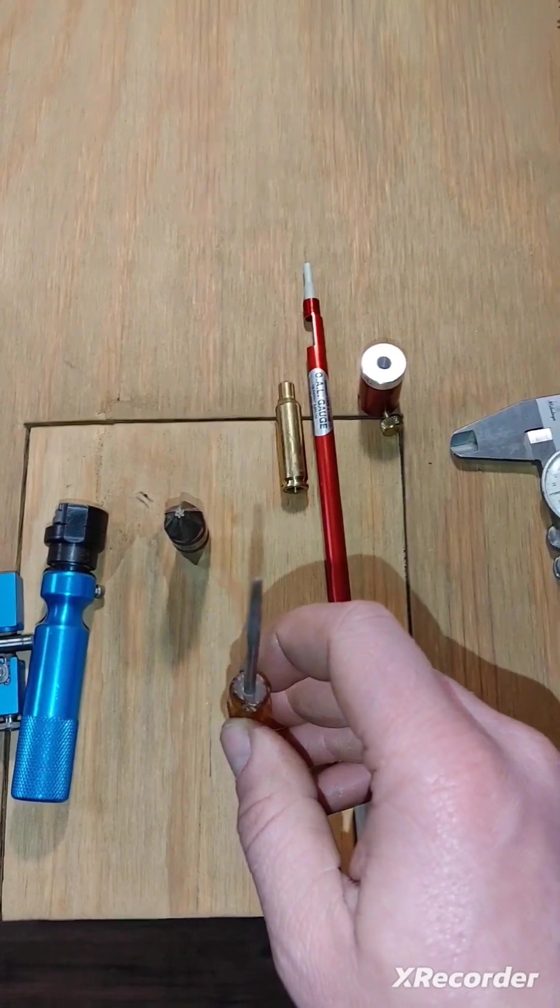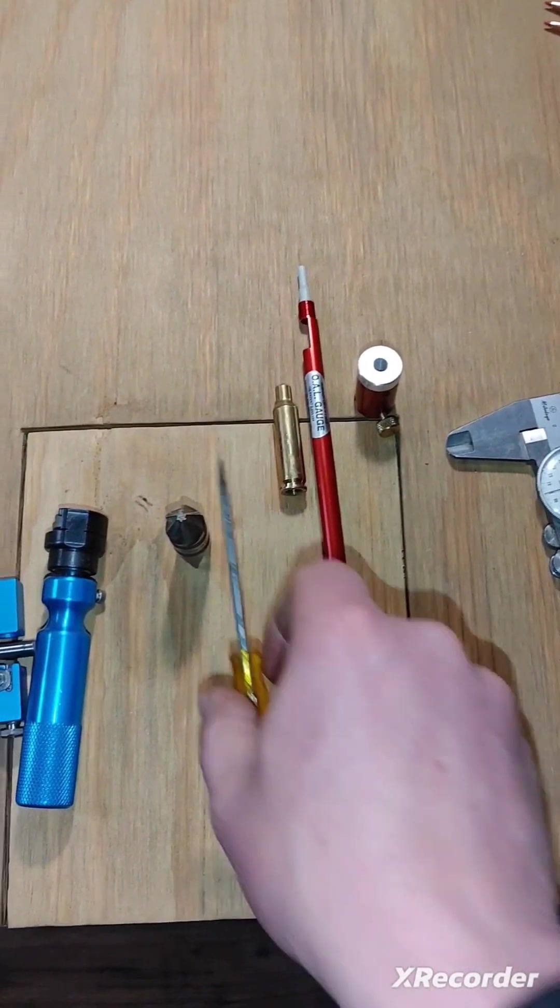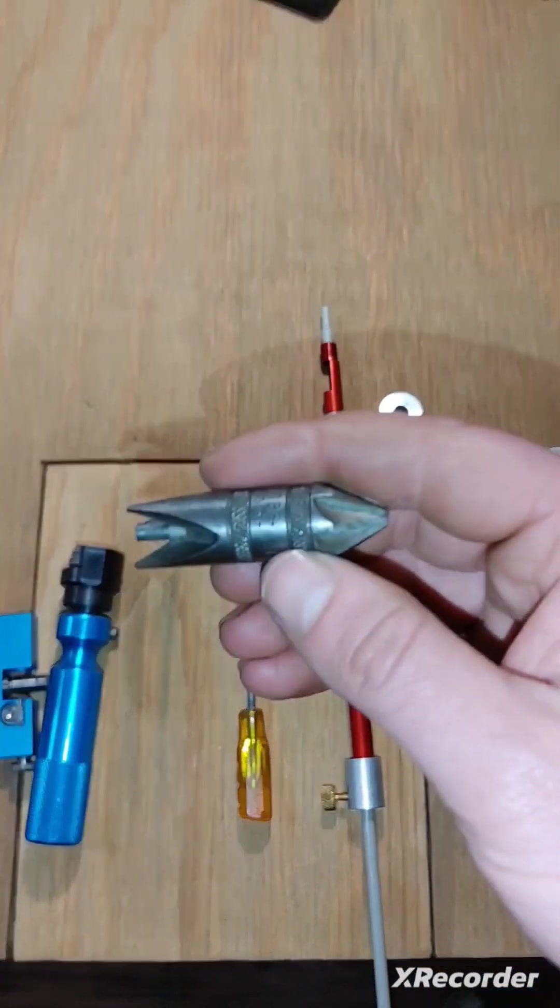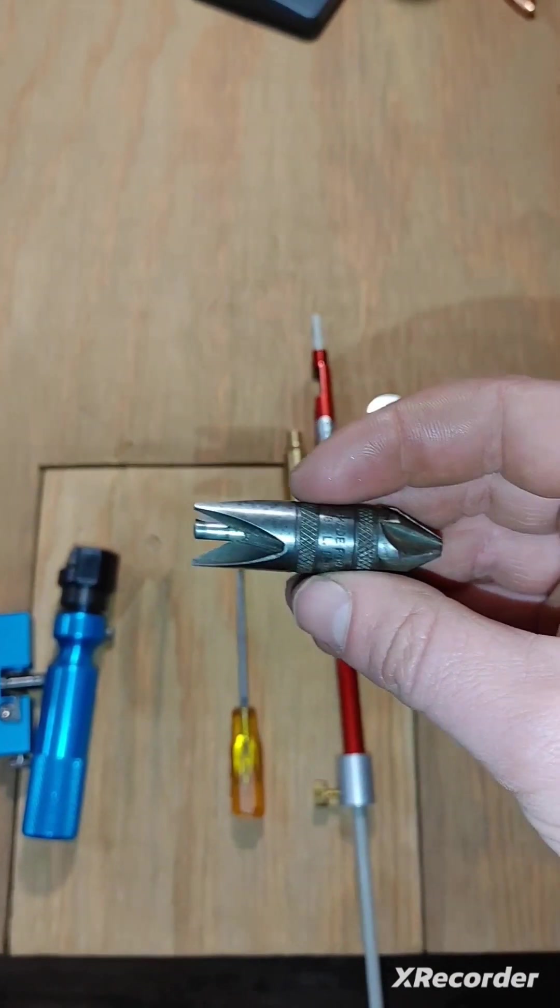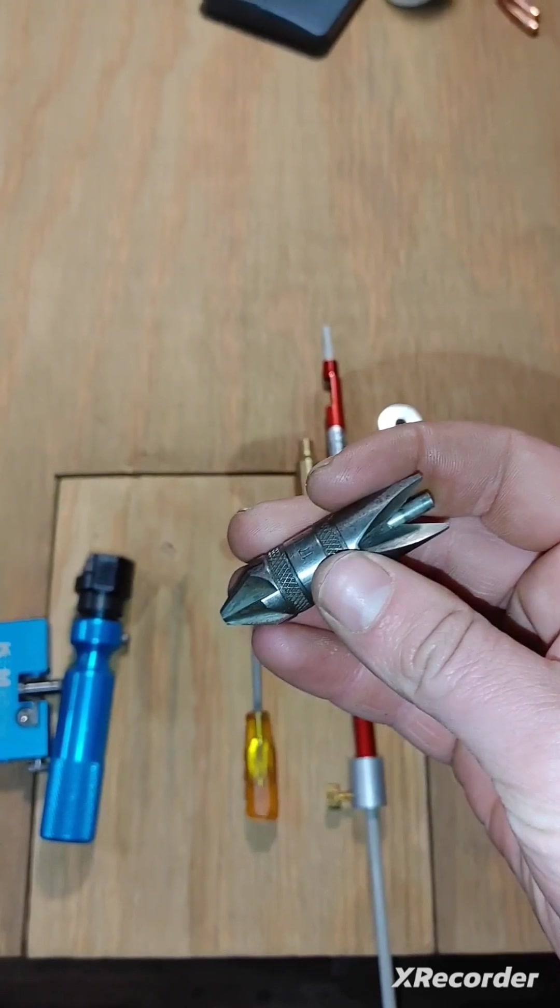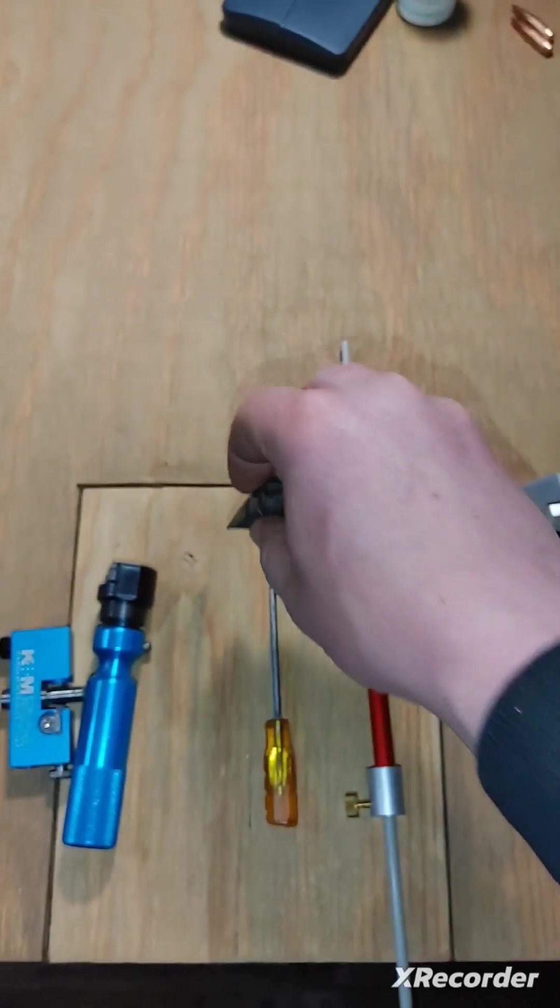Crappy screwdriver used for cleaning out the primer hole. Neck chamfering tool, many names for it. That's what I call it. Use this, clean your neck inside and outside on your brass.